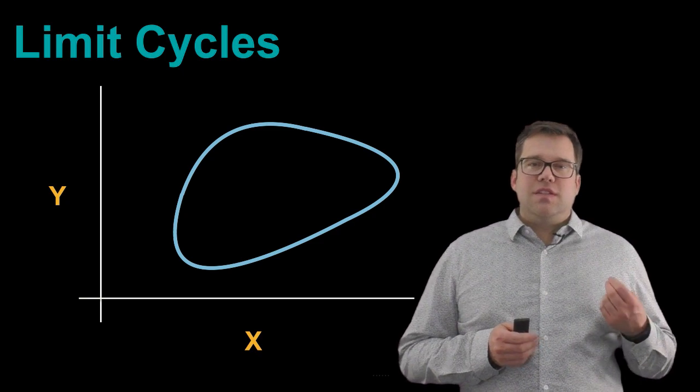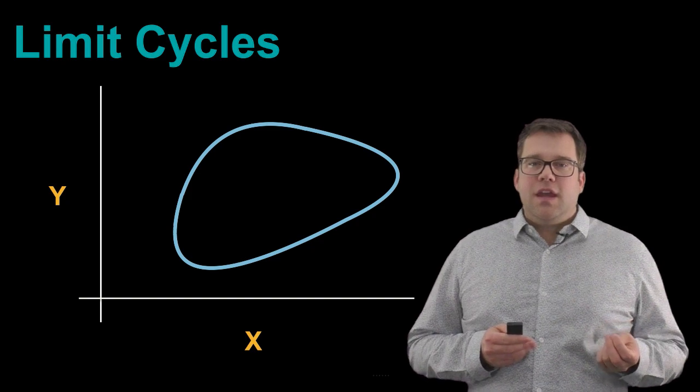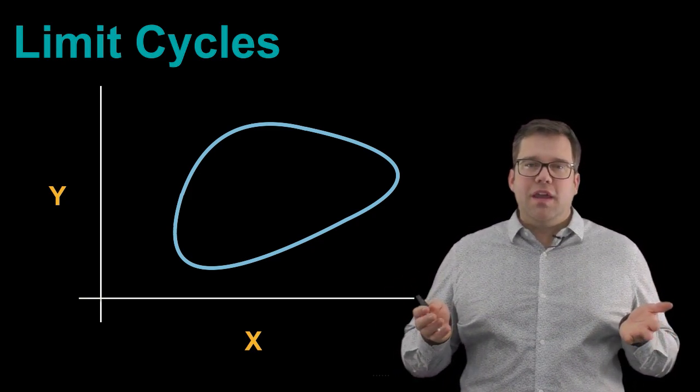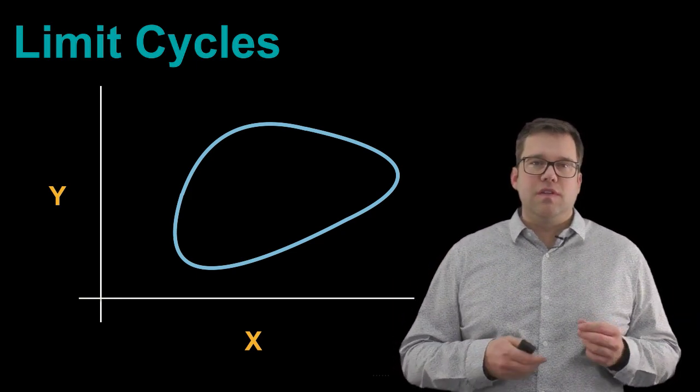We can imagine that the steady state of some system goes to a paired value of x and y. In the case of a limit cycle, it goes to this set of paired values, x and y, that lie along one curve. And so we'll continually, over time, cycle through all these different values.